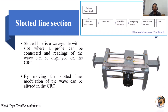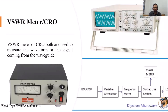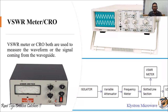The VSWR meter and CRO are output devices used to measure the waveform or signal coming from the waveguide. On the CRO you can see the amplitude and time period of the signal, and you can also measure the voltage standing wave ratio using the VSWR meter. Both are used to measure the signal present in the waveguide flowing throughout the bench setup.